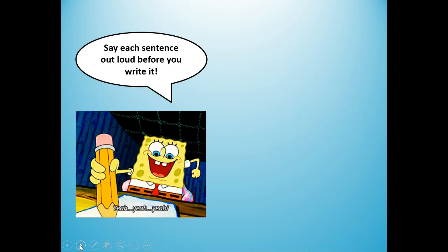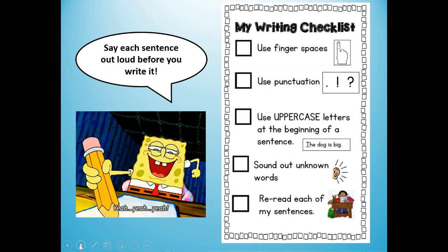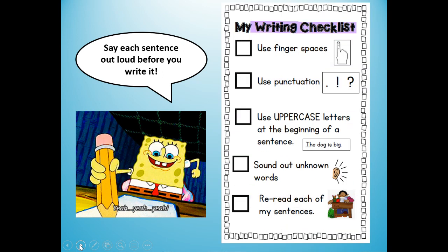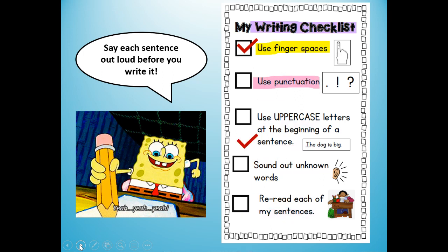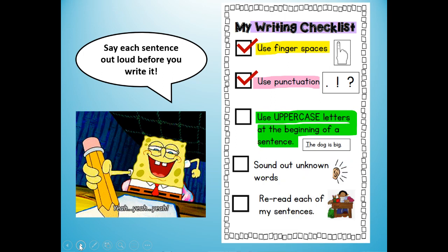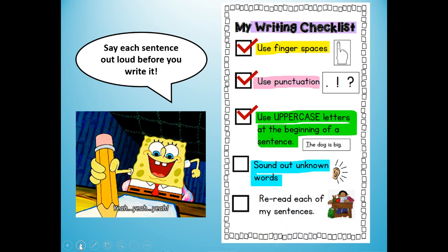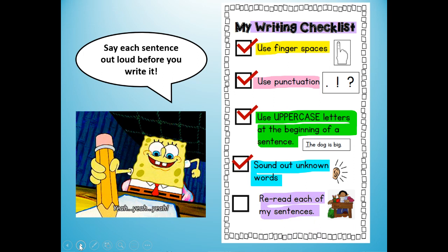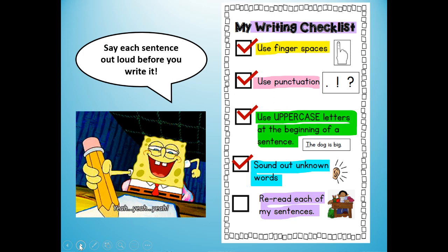Remember, say each sentence out loud before you write it. And remember this writing checklist: when you write each sentence, use finger spaces between your words; use punctuation or periods at the end of each of your sentences; use uppercase letters at the beginning of a sentence; and sound out unknown words — if you come to a word you don't know how to spell, write the sounds you hear. And my favorite: reread each of your sentences to make sure that they make sense. Did you write all the words you needed to, or did you forget to add a word?